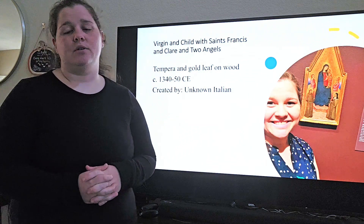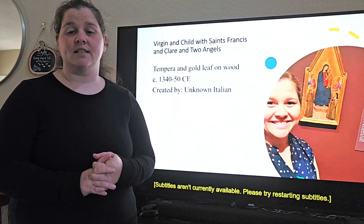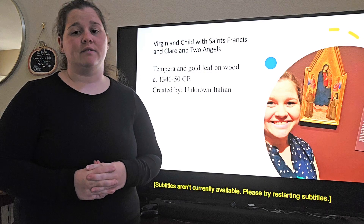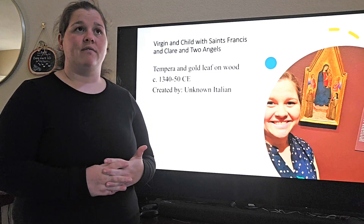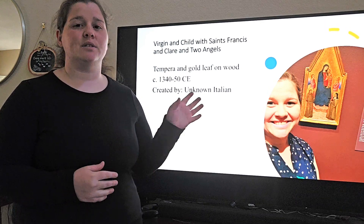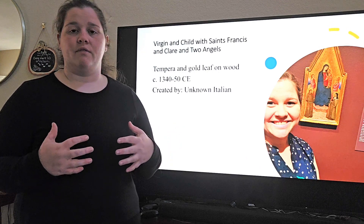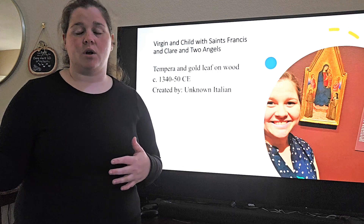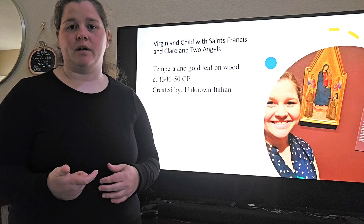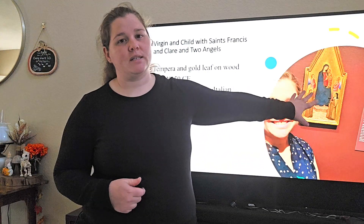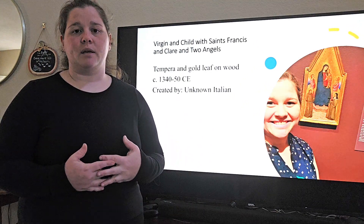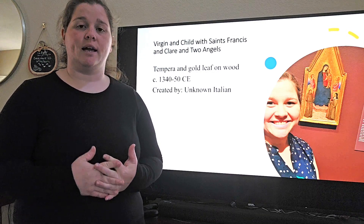This first piece is titled Virgin and Child with Saints Francis and Claire and Two Angels. This was created by an unknown Italian in 1340 to 1350 CE and is representative of the Italian culture, specifically the Sienese culture or region. This was created right in the midst of the European Black Plague that was sweeping across all of Europe, right on the tail end of the Middle Ages and on the cusp of the Renaissance period. In fact, the gold leaf used in this piece would later become very characteristic of the Italian Renaissance. I chose this piece primarily due to its religious context as well as its iconography.